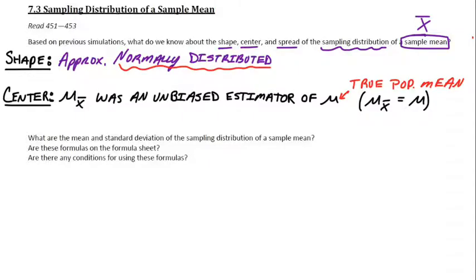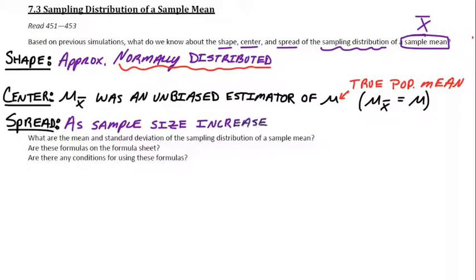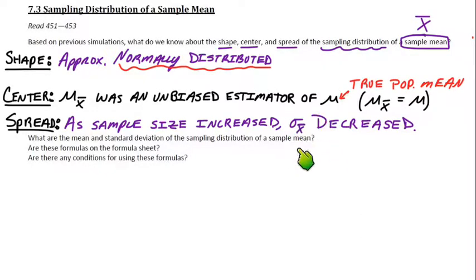So we've got shape and center. For the spread, it's the same trend as it was for the p-hats. As the sample size, little n, increased, the standard deviation — which is our measure of spread — decreased.